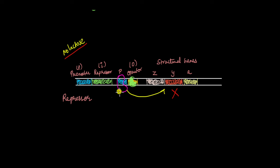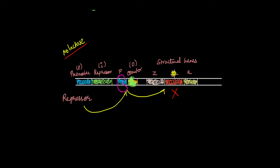So when lactose is not present, the repressor protein binds to the operator region and it prevents RNA polymerase from accessing the promoter, thereby preventing the expression of lac Z, Y, and A. So no beta-galactosidase, permease, or trans-acetylase is produced in the absence of lactose.